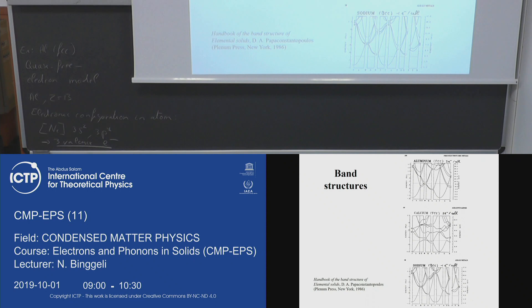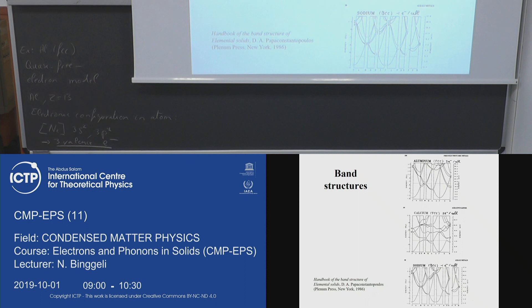Calcium behaves very differently from a free electron system and is a semi-metal with a low density of states at the Fermi energy. For aluminum, overall about three bands are filled, but the Fermi energy is above most of the splittings because it sits higher relative to the lowest band. This is the case we will examine today — we will calculate the band structure along the gamma-X direction and examine the splitting at the X point.